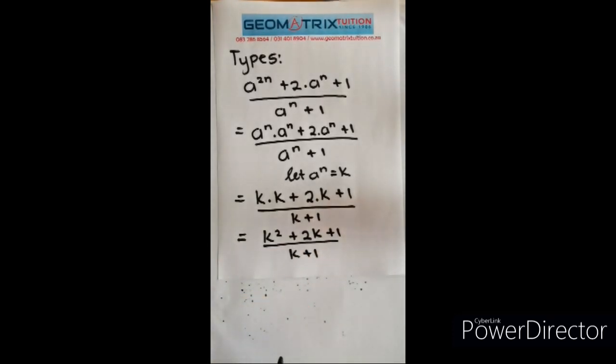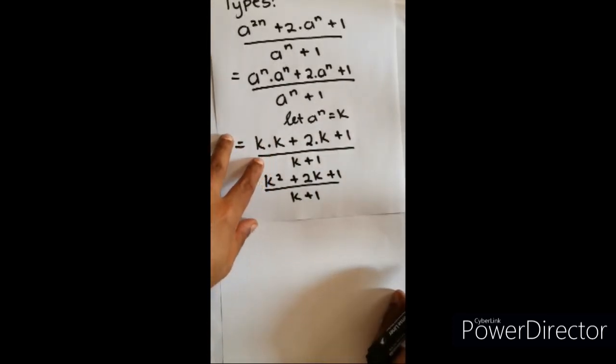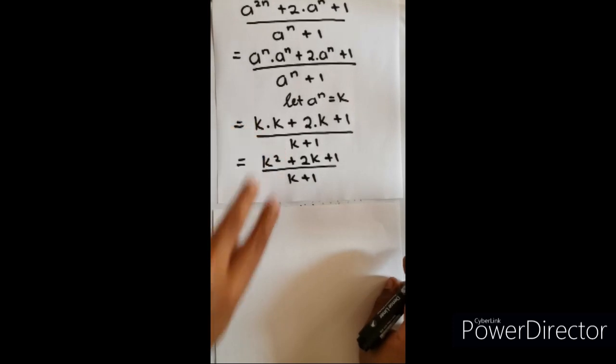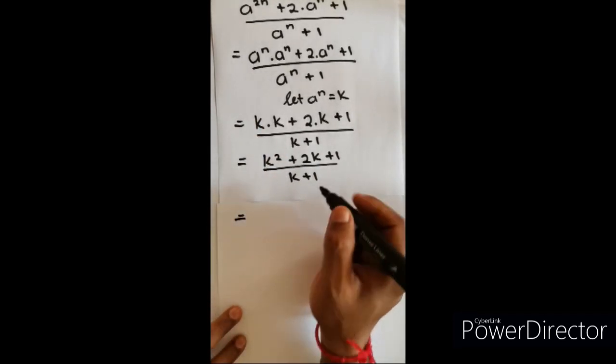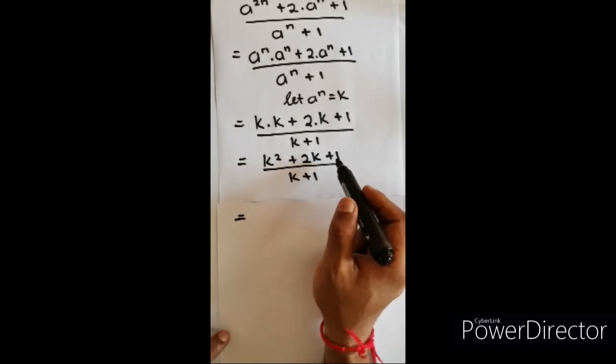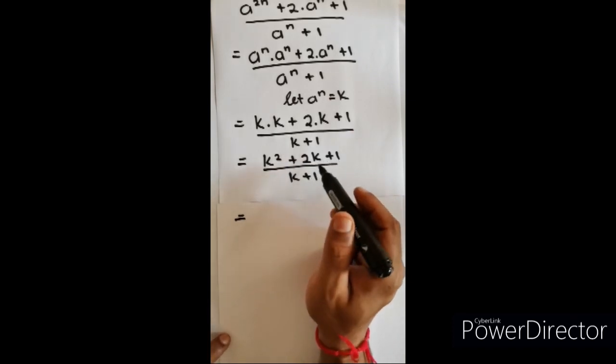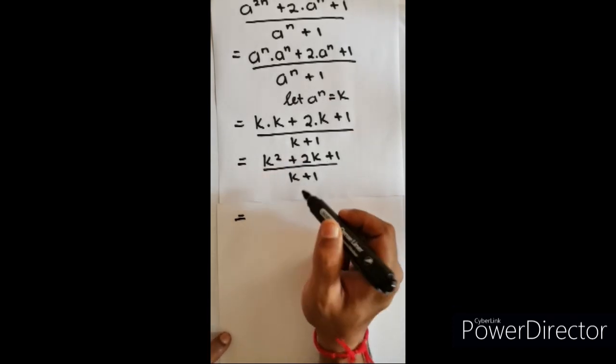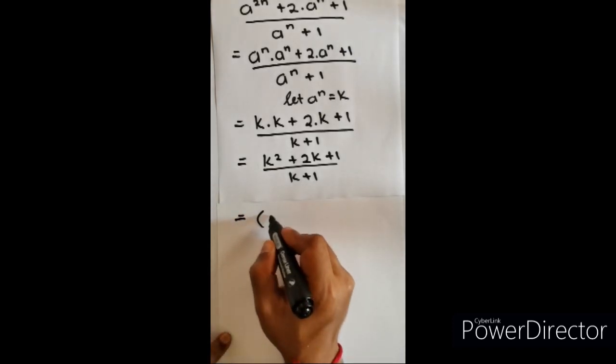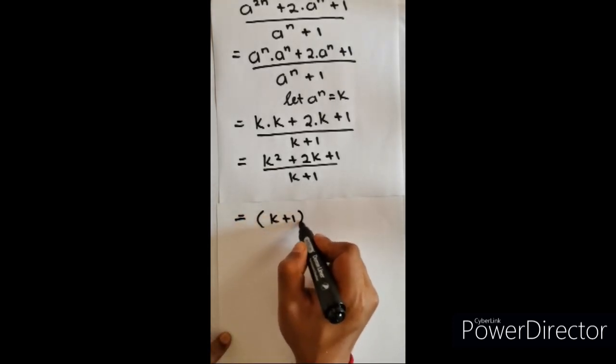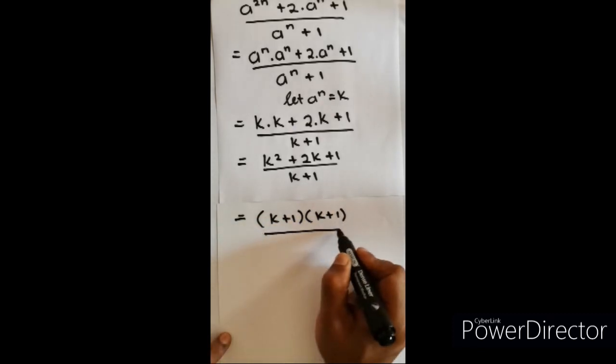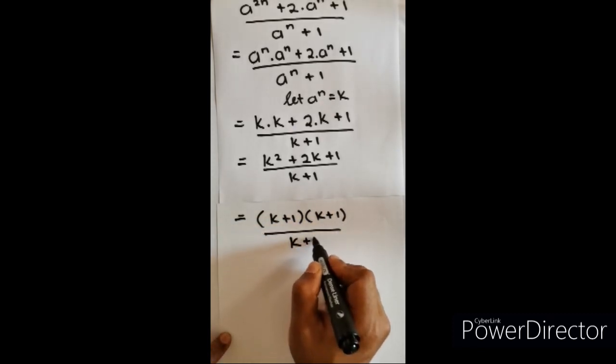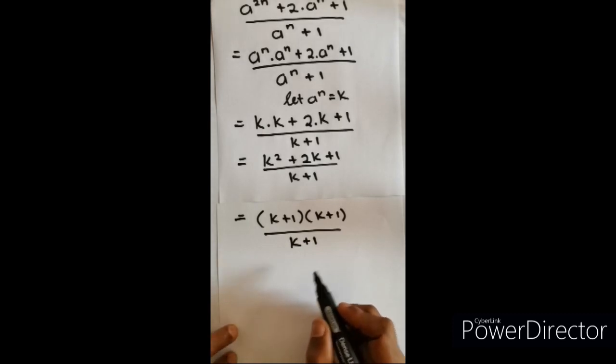Now if you look at the top you will identify that it looks like a trinomial. So now go and factorize that trinomial and you will get what? Two numbers multiply together give me positive one and added together give me positive 2k. I will get k plus one into k plus one all over k plus one.